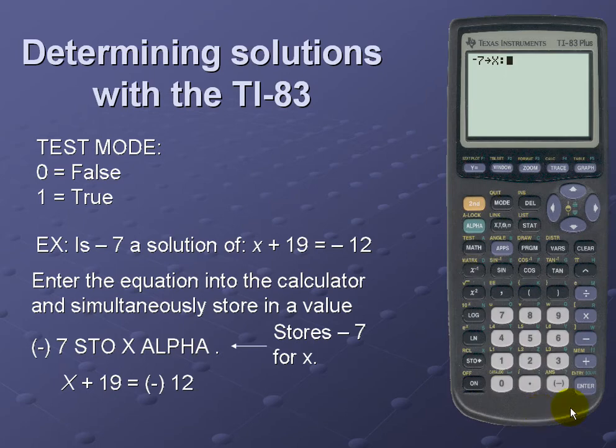So next we'll enter our equation: x plus 19 is that equal to negative 12? Notice a 0 is returned; therefore negative 7 is not a solution.